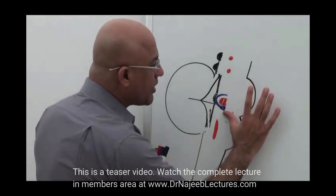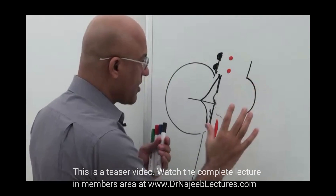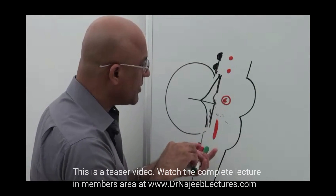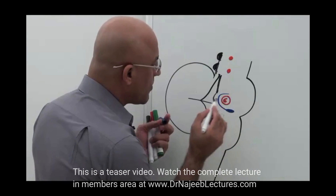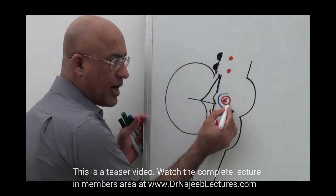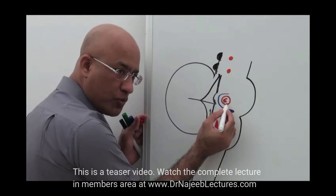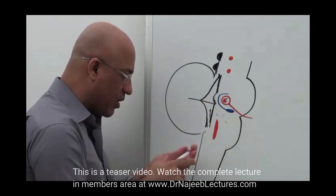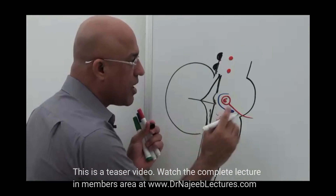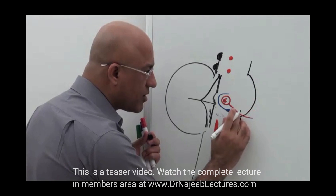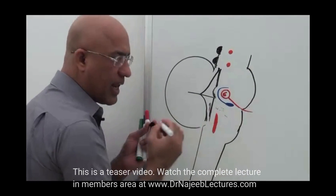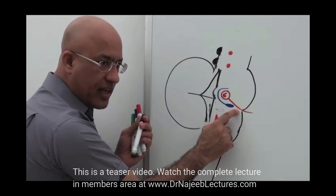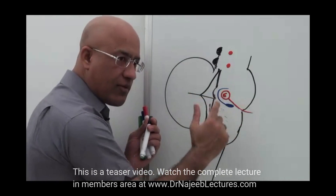Now, how exactly do the fibers exit? The sixth nerve fibers emerge from the nucleus and they move downward and forward, exiting from the brainstem between the lower part of the pons and the upper part of the medulla — we say the lower pontine sulcus. You can appreciate the exact location of its exit from the frontal view.